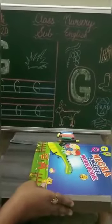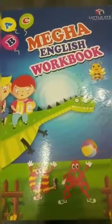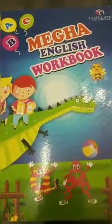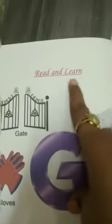Now kids, we will do book work. Take out your Mega English workbook and open your book. Look at here — these are the pictures related to letter G. You should read and learn. Now kids, take out page number 65.